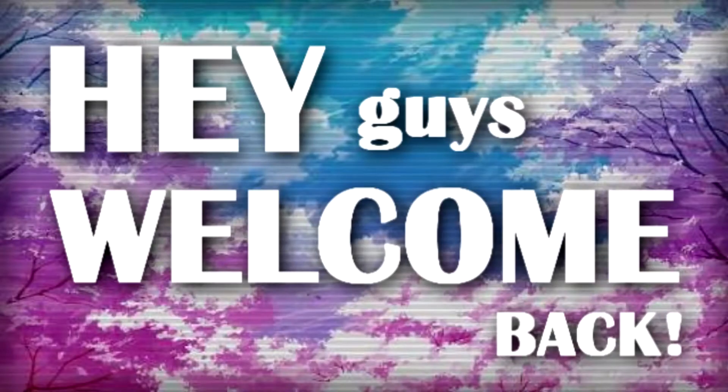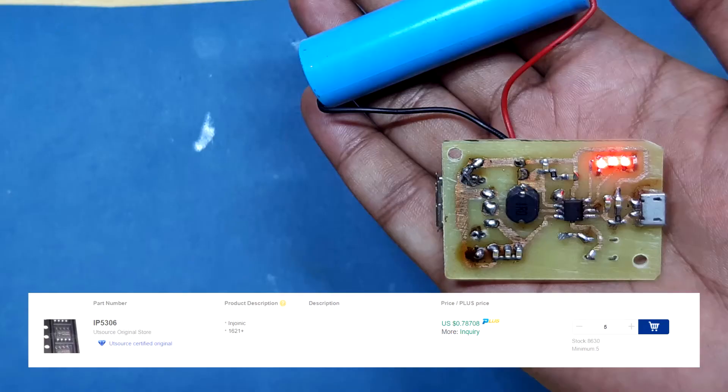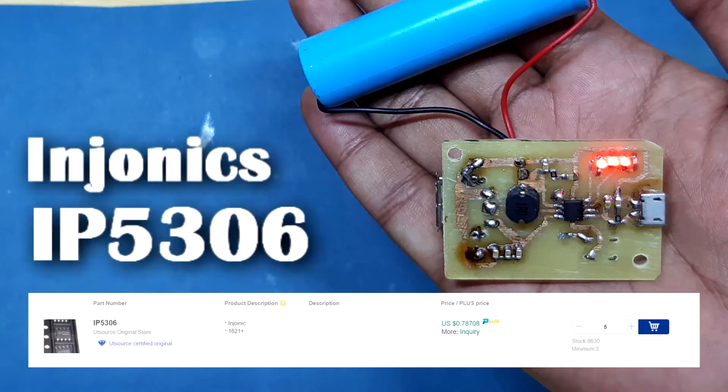Hey guys, welcome back. Today I'll be showing you how to make a power bank circuit with an Injoinix IP5306 IC. So let's get started.